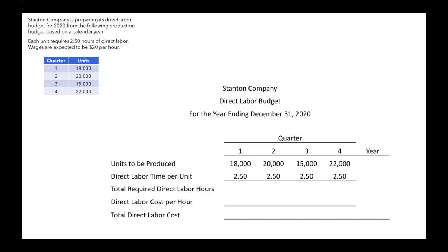For total required direct labor hours, we take our units to be produced and multiply by 2.5 — our direct labor time per unit. So in quarter one we'll need 45,000 hours of direct labor, quarter two 50,000. We do that for each of the four quarters.